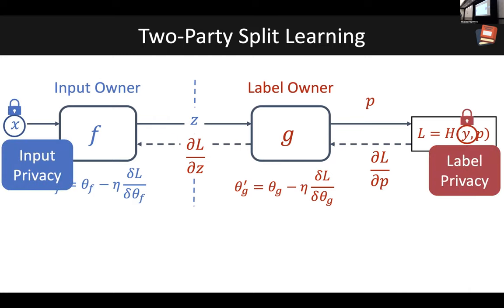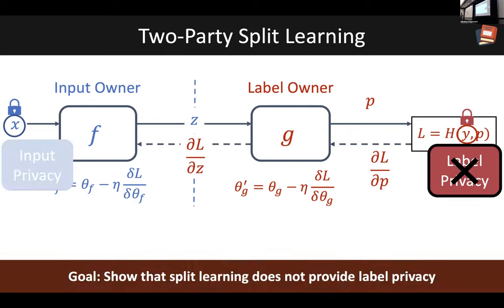Note that in split learning, both the inputs and the labels are not shared explicitly across the two parties. Instead, proxies of the input and proxies of the labels are shared in the form of the embedding and the gradient. This creates the appearance of privacy because instead of directly sharing private data, some proxies of the private data are shared. The goal of our work is primarily to break this and show that split learning does not protect label privacy, by designing a high-accuracy label leakage attack.